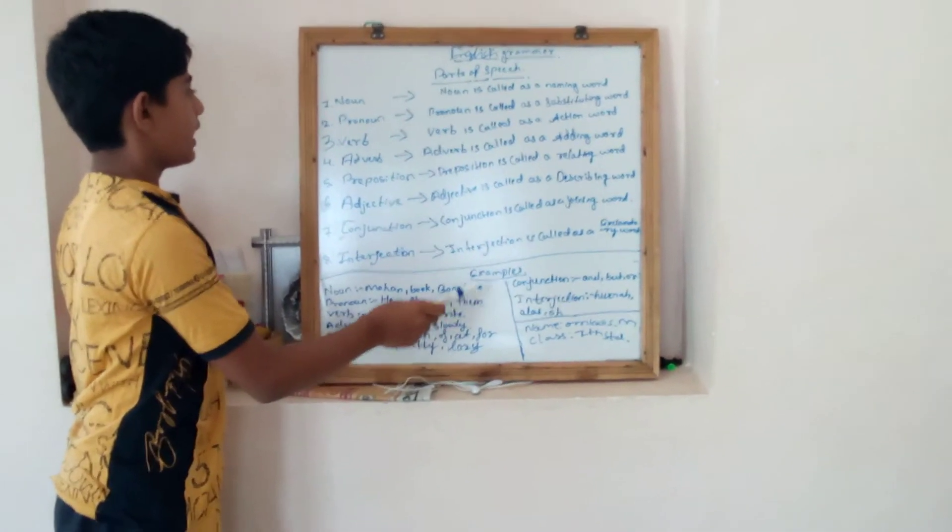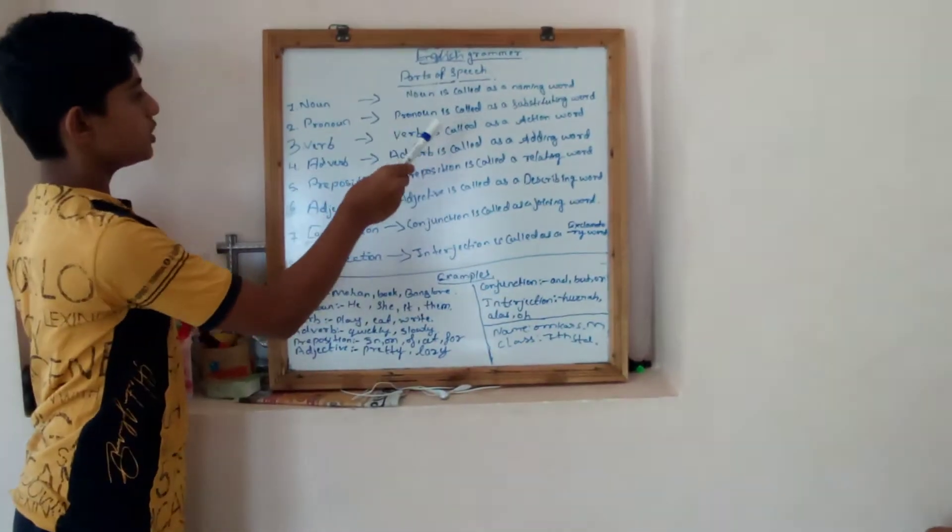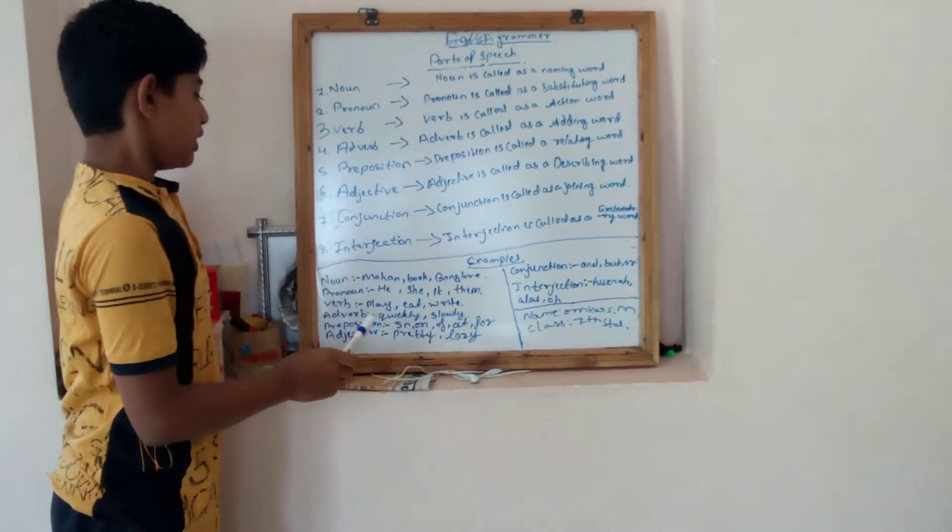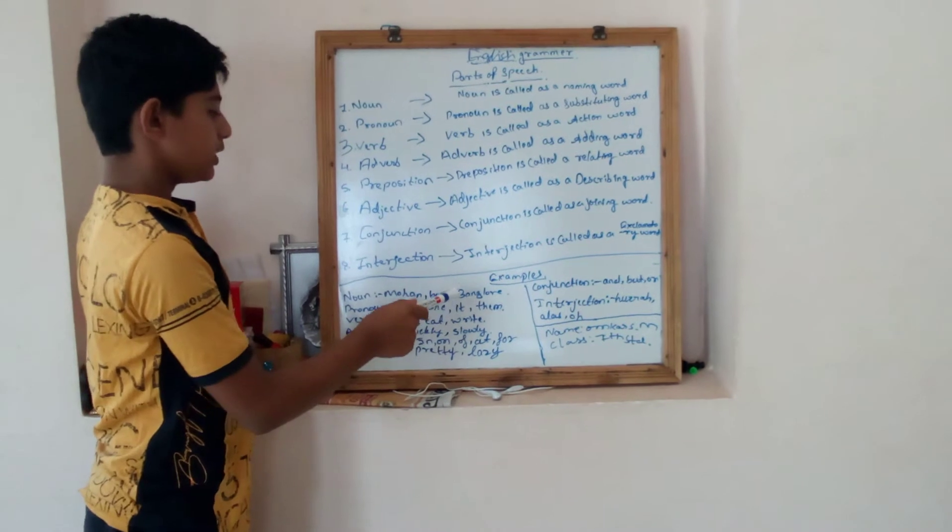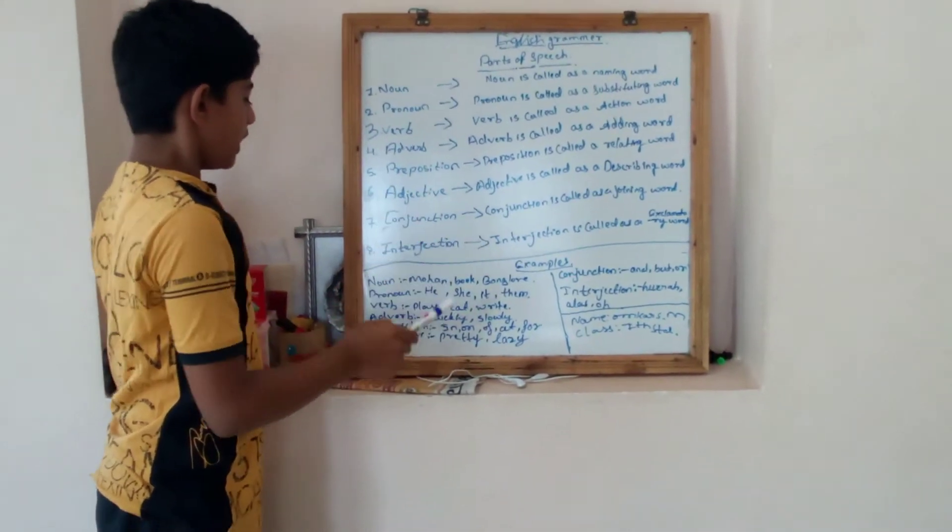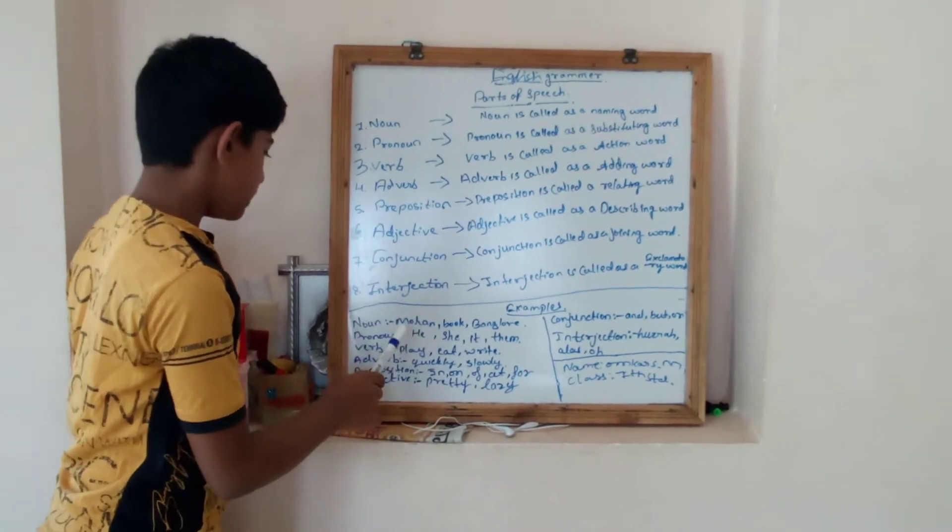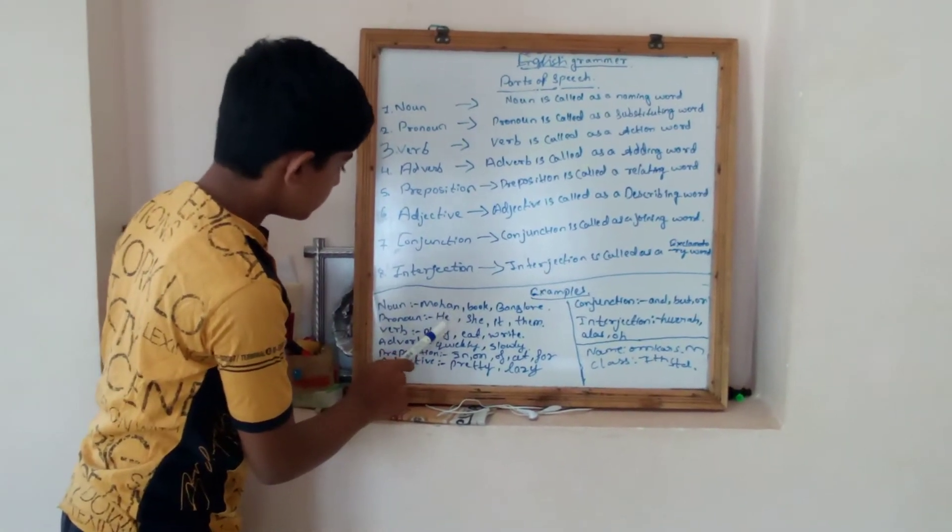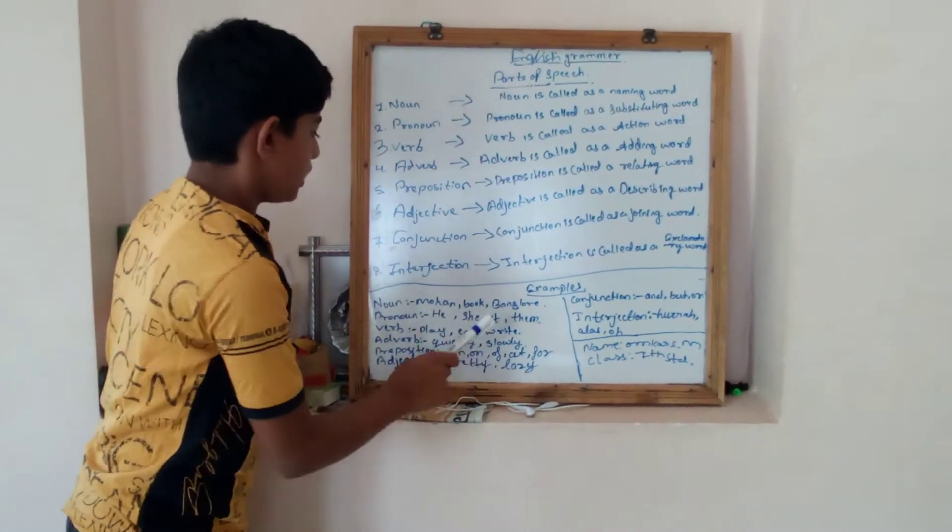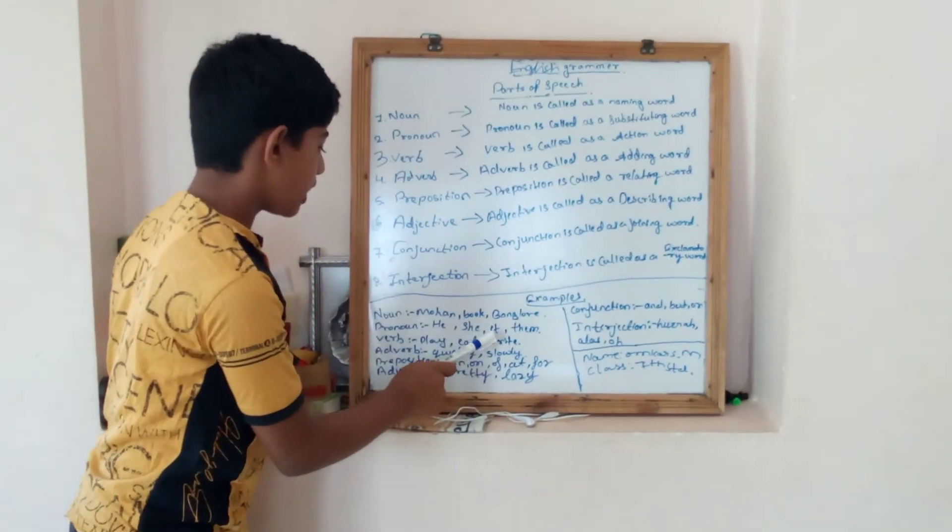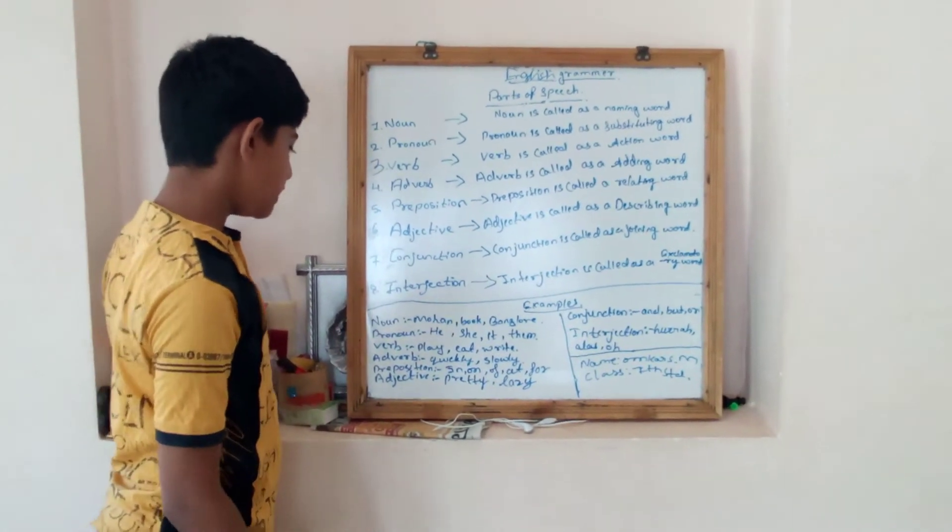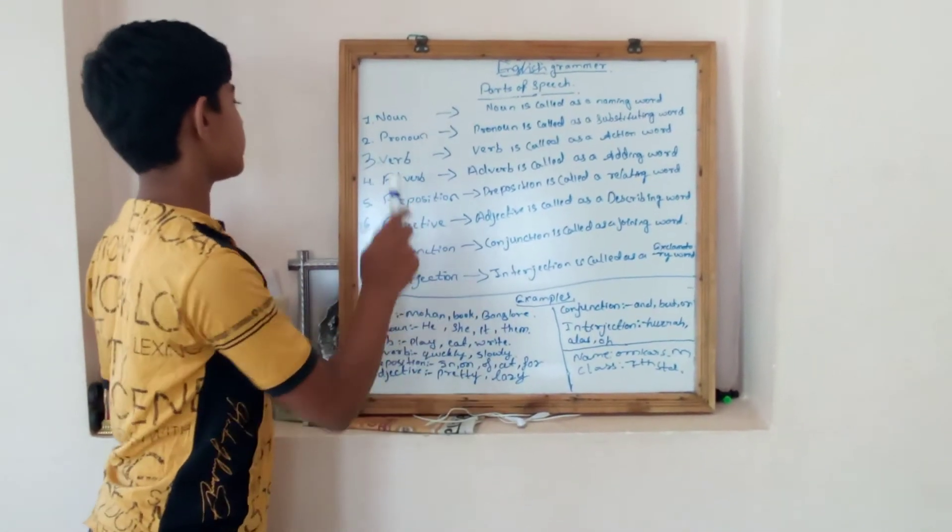Bangalore is a place. And pronoun - pronoun is called as a substituting word. Example: he, she, it, them. Because it is used instead of a noun. We can call Mohan as he, book as it and Bangalore also as it. So he, she, it, them are called as a pronoun.